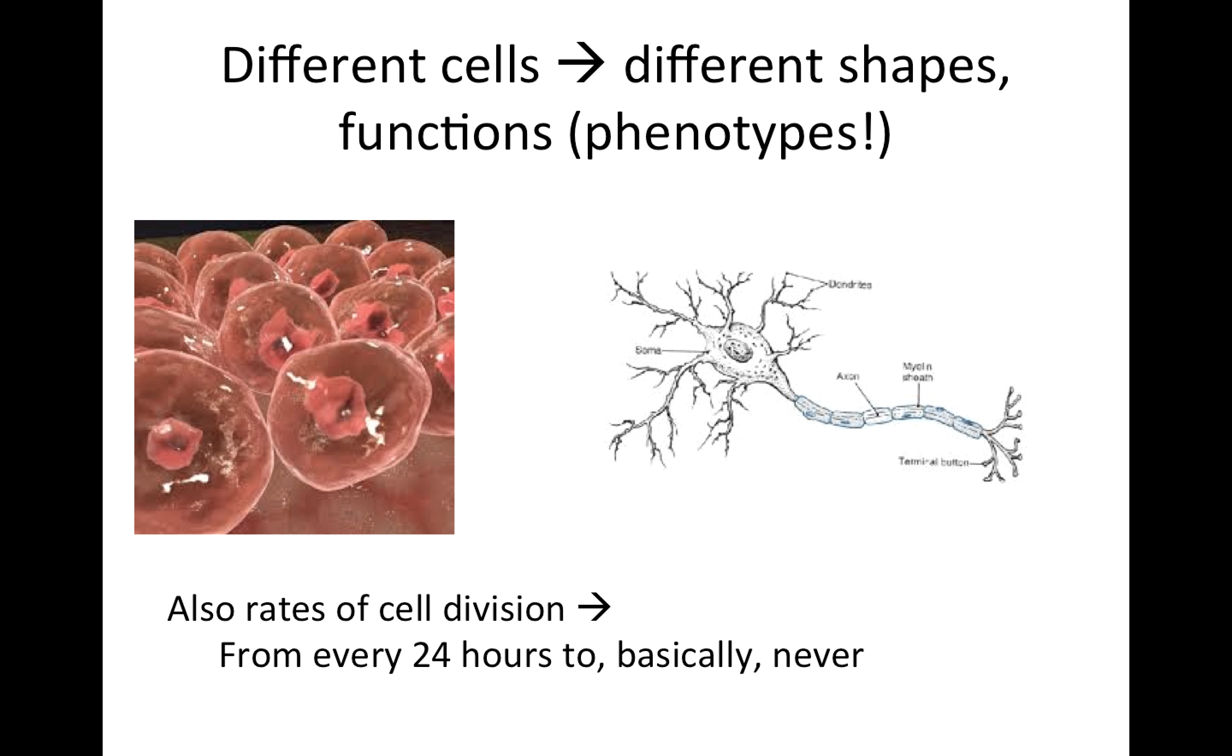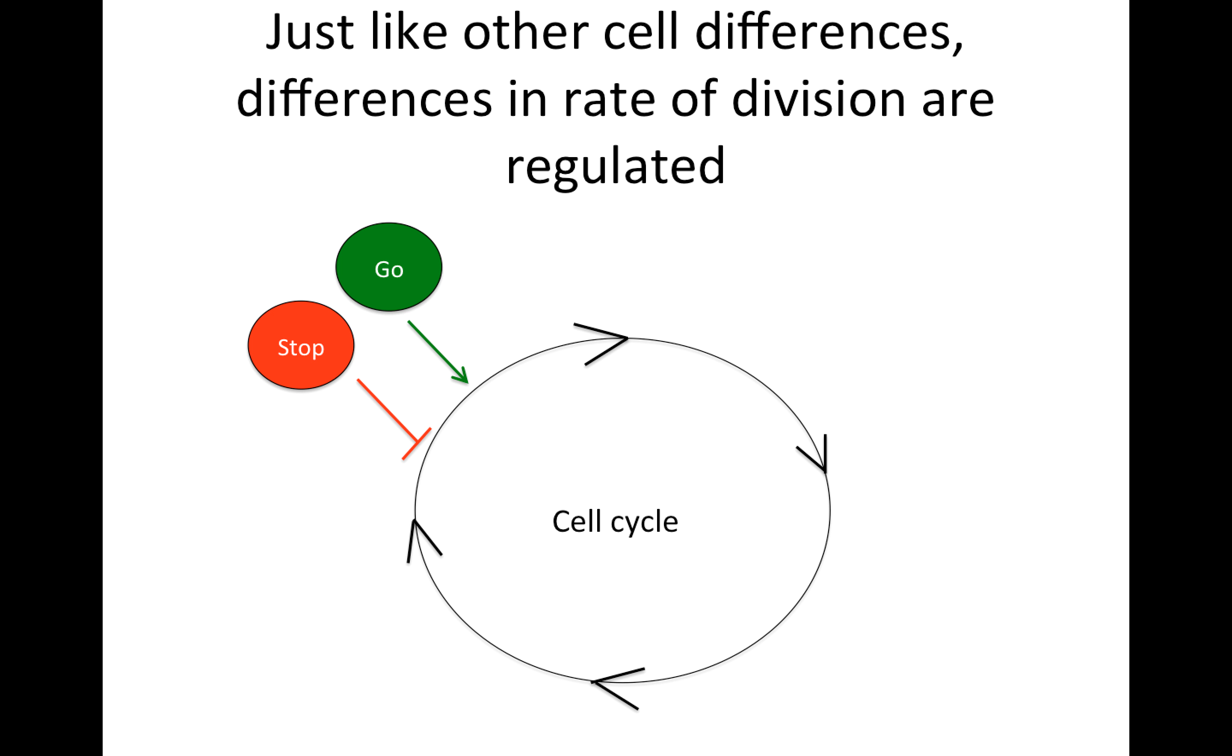Well, different cells also have different rates of division. So early in embryogenesis and for certain parts of certain tissues that are actively proliferating, human cells will divide every 24 hours or so. And then we have other cells in our body, particularly as adults, that are basically done dividing. They will never divide. And so just like the other cell differences, these differences in rate of division are regulated.